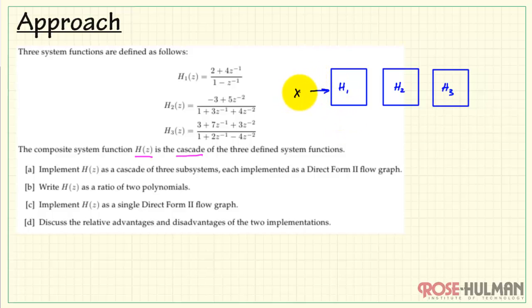Each subsystem is a box. We have our primary input, X of Z, entering H1. Its output feeds the input of H2 and so forth until we have the primary output, Y of Z, emerging.